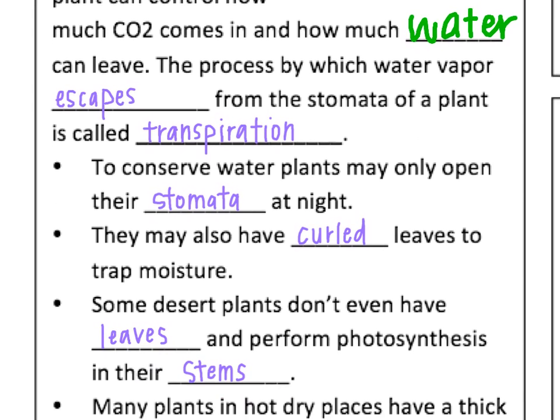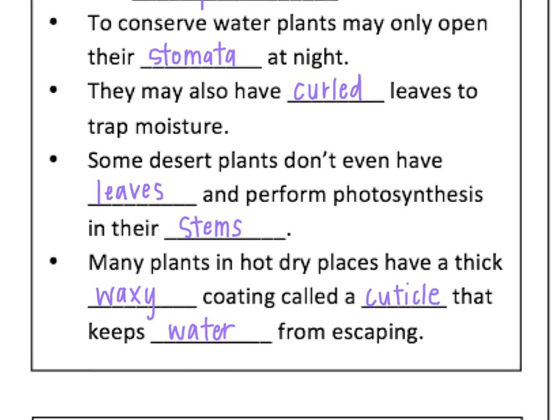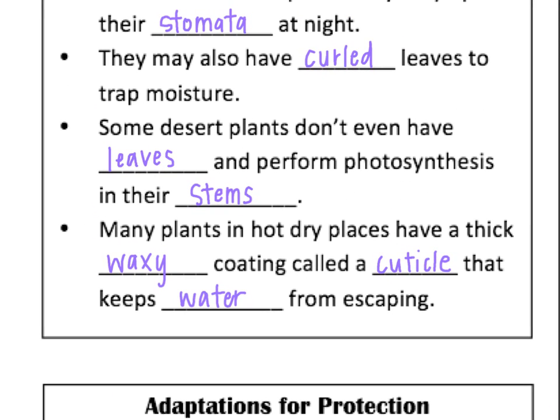To conserve water, some plants will only open their stomata at night when the heat of the sun doesn't cause that water to evaporate. Some plants have curled leaves like we looked at in the desert — it traps moisture and keeps it from escaping. Some desert plants, like cactuses, don't even have leaves and just perform photosynthesis in their stems, which don't lose nearly as much water. And some plants that live in really hot and dry places have a thick, waxy cuticle that keeps water from escaping — think of the very waxy, tough outer coating of a cactus.